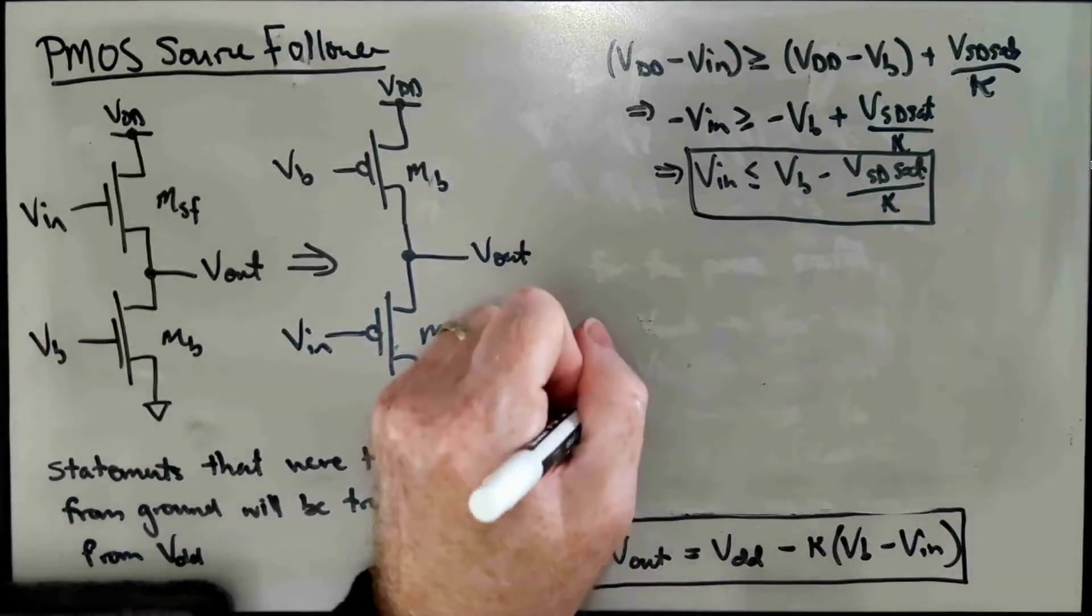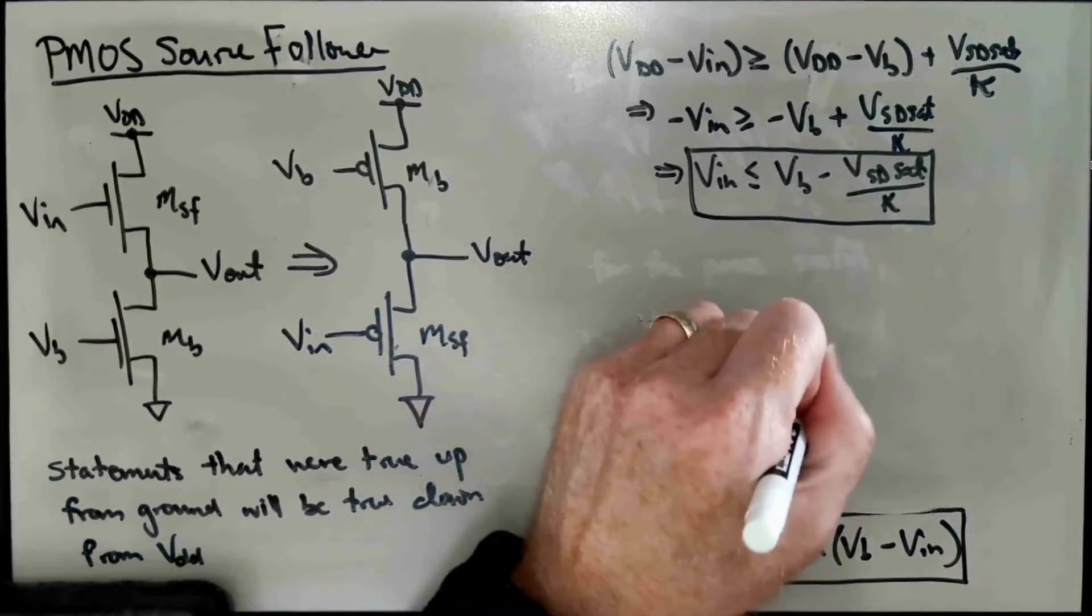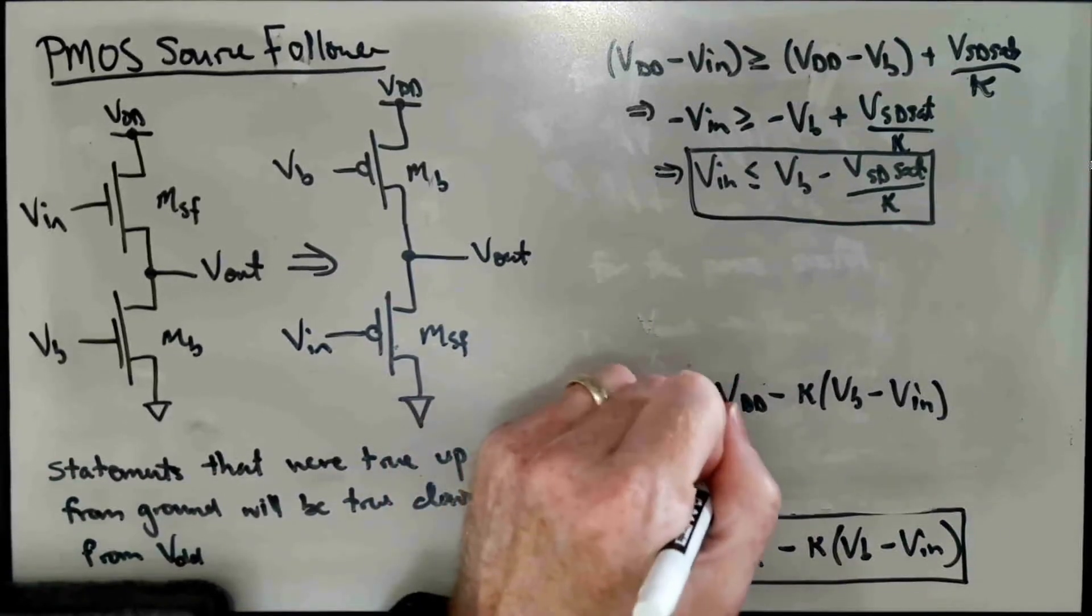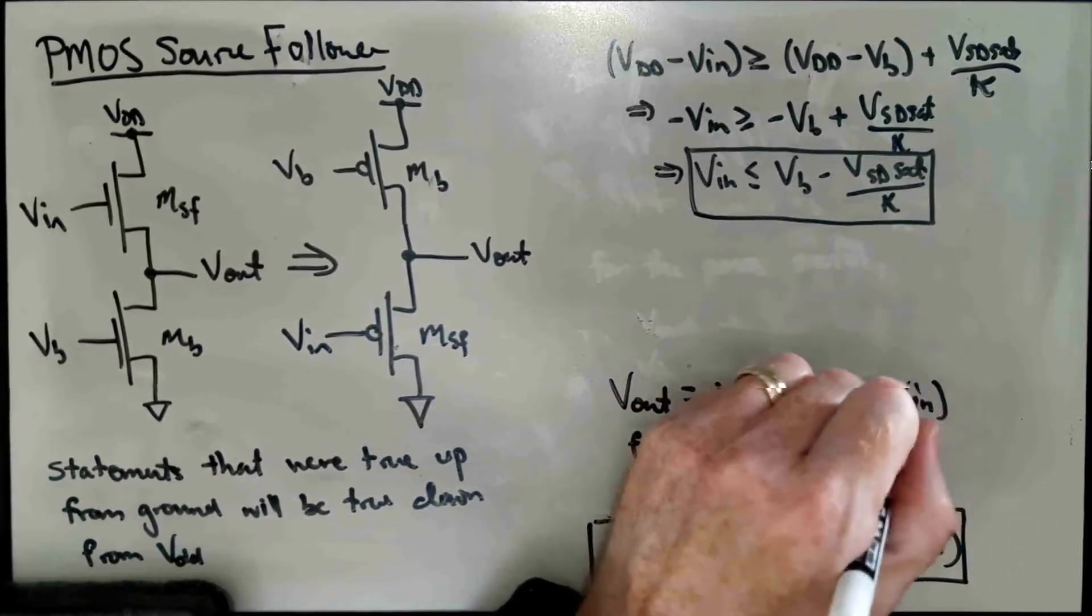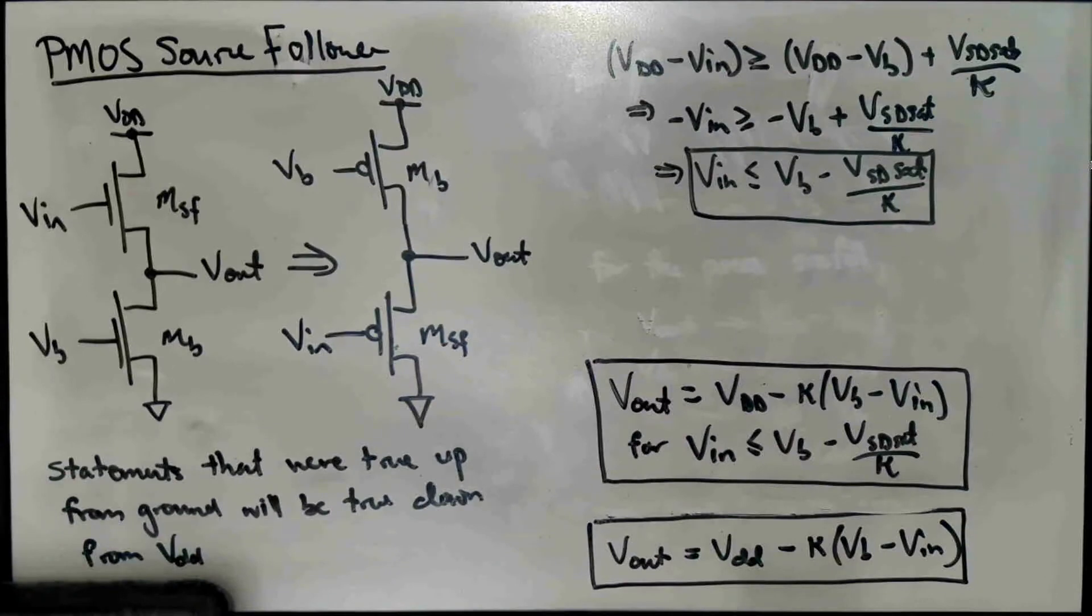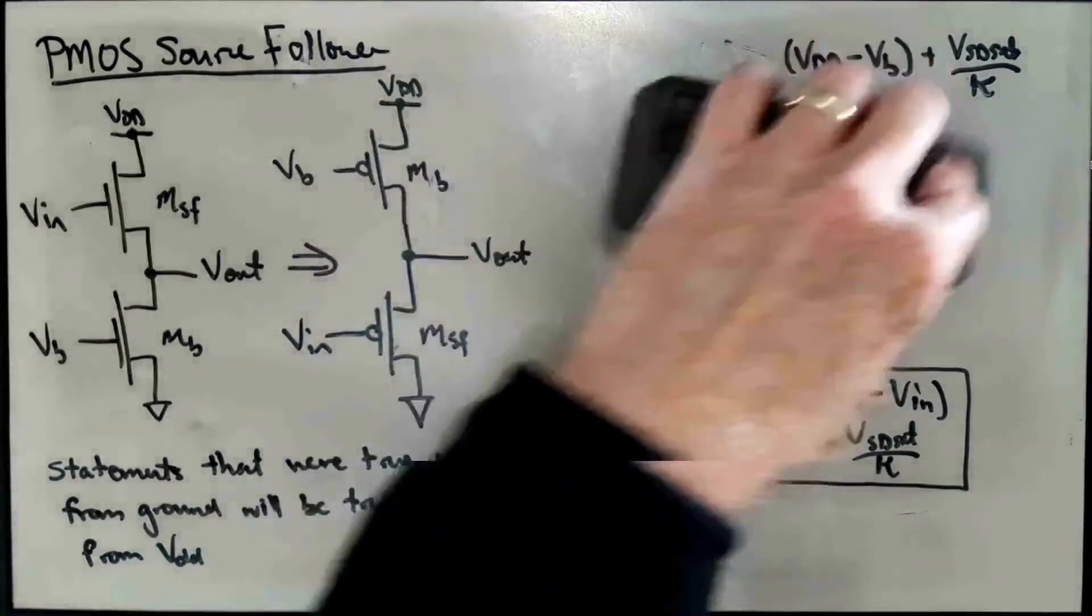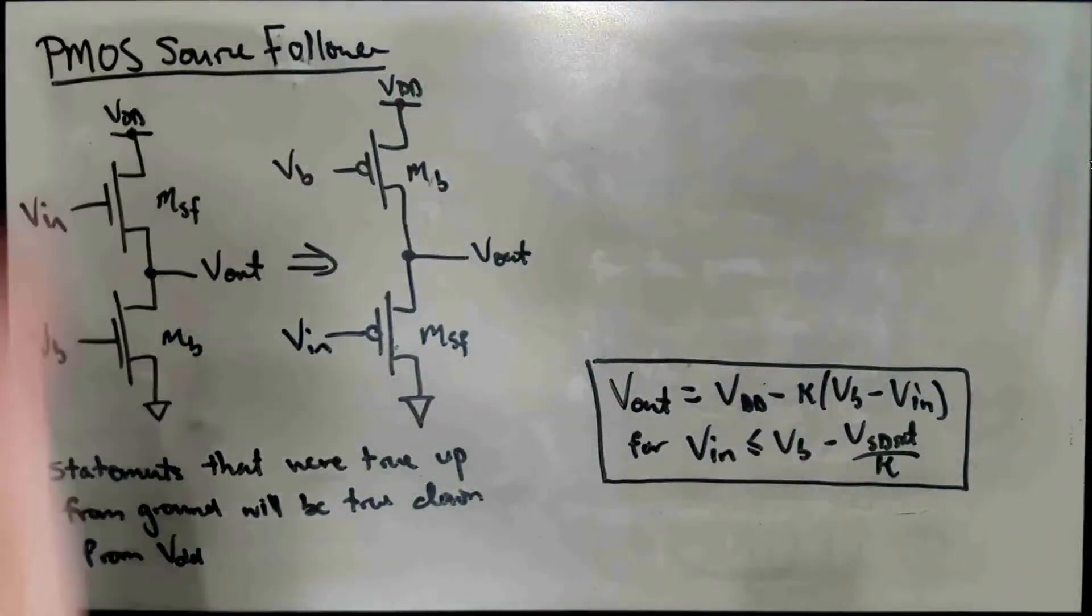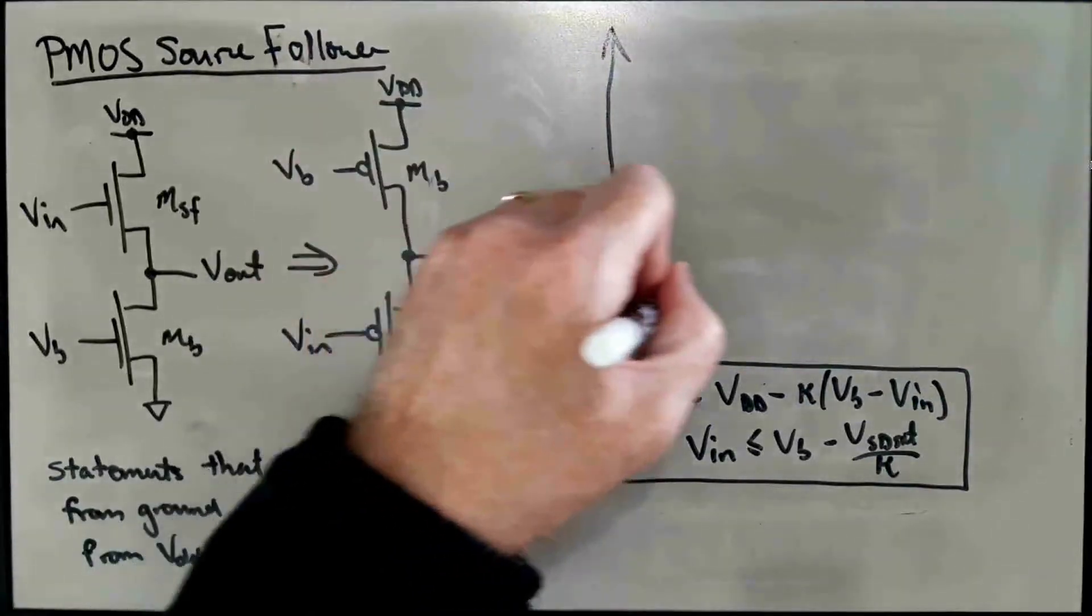So if we collect these things up and sketch this: Vout equals VDD minus Kappa VB minus VIN for VIN less than or equal to VB minus VSDsat over Kappa. Now, of course, we could sketch this from the equation, but we can also sketch it by just transforming the NMOS voltage transfer characteristic appropriately.